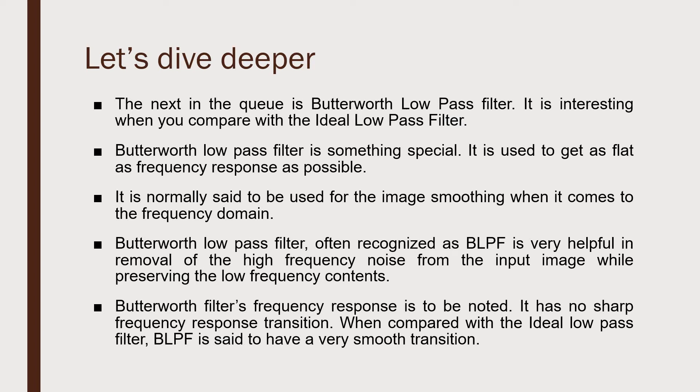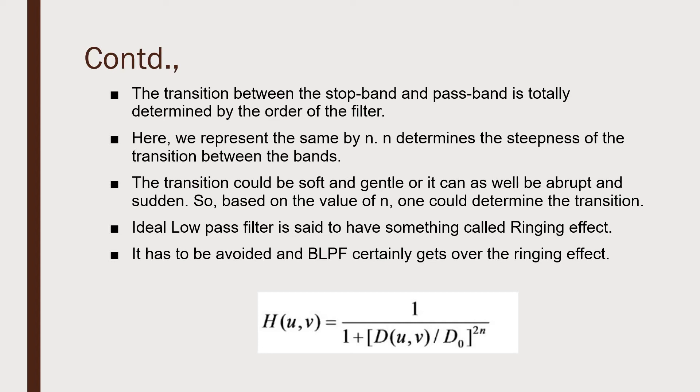The transition between the stop band and the pass band is totally determined by the order of the filter, represented by the letter n. The n determines the steepness of the transition between the pass band and the stop band. The transition could be soft or gentle, or it can be abrupt and sudden. Based on the value of n, one could determine the transition.